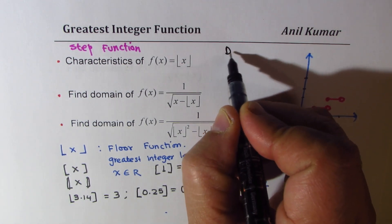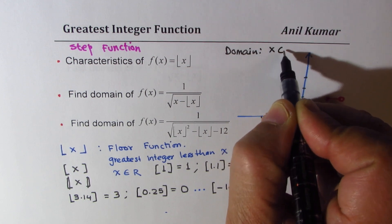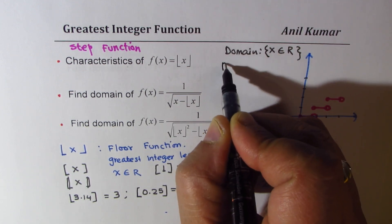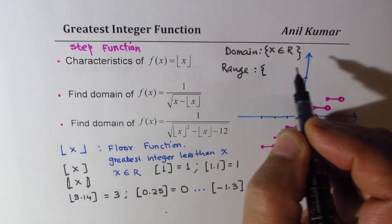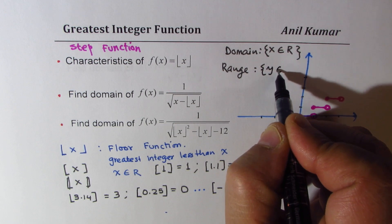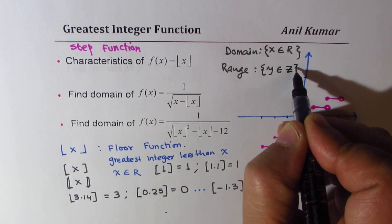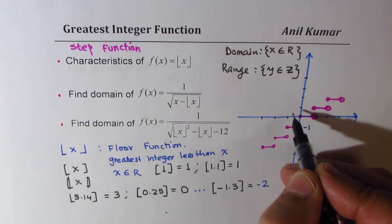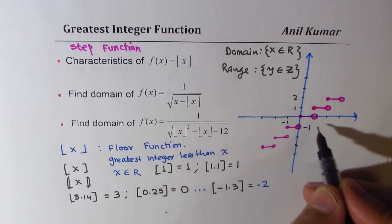For this function, the domain is x belongs to all real numbers. As for the range, y belongs to integers — it could be 1, 2, and so on, or it could be minus 1, minus 2, and so on. So the range is all integers.